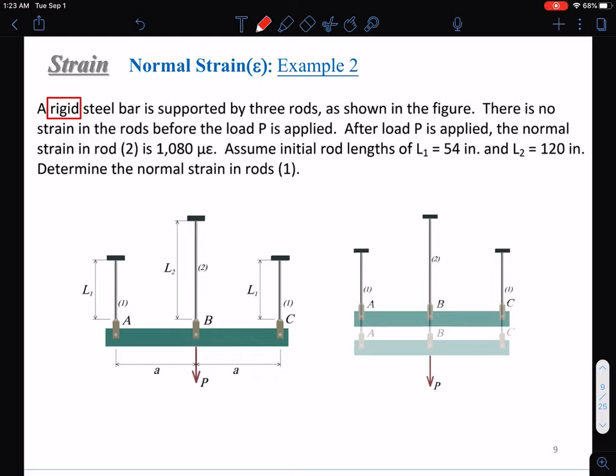Example two: we have a rigid steel bar supported by three rods, two L1 and one L2. After load P is applied, the normal strain in rod two is 1080 microstrain. Assume initial rod lengths of L1 equals 54 inches and L2 equals 120 inches. Determine the normal strain in rod one.